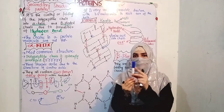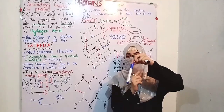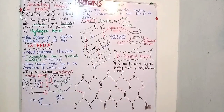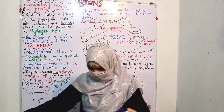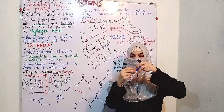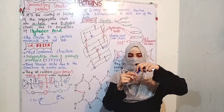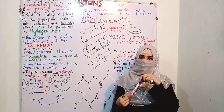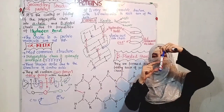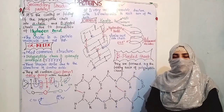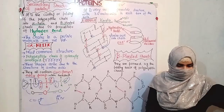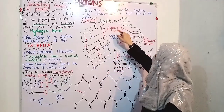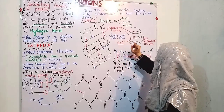To understand what a turn is — suppose I have a marker and a wire; if I roll the wire into a spring around the marker, each loop is a turn. This is the alpha helix structure. Each turn contains 3.6 amino acids.